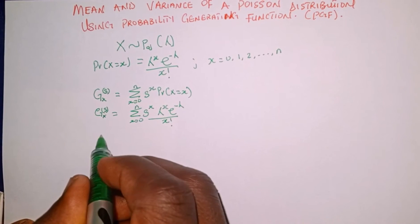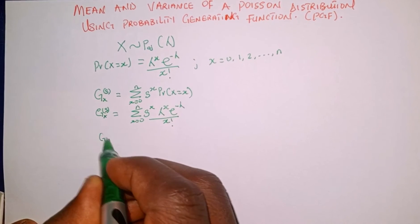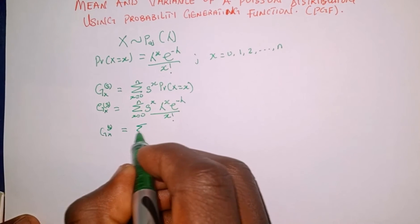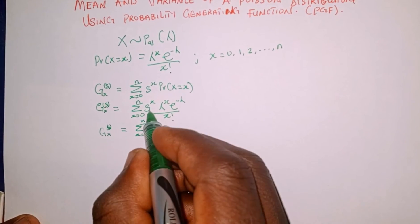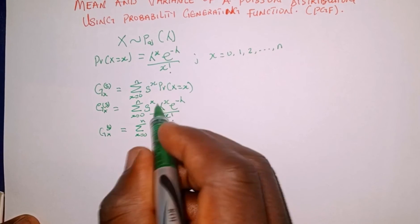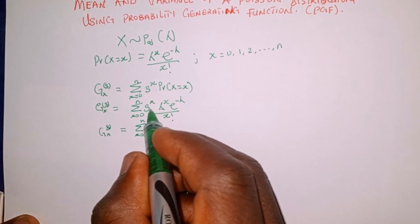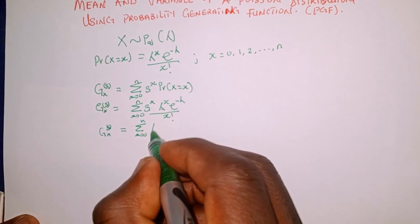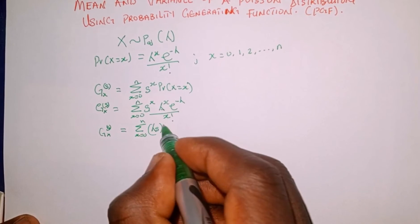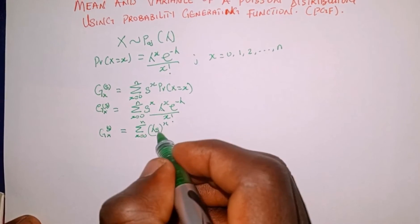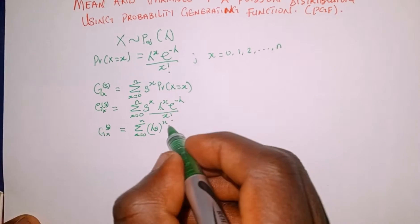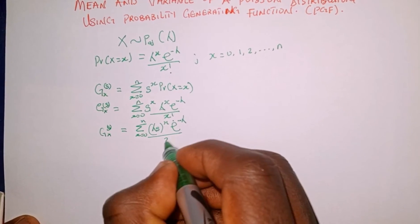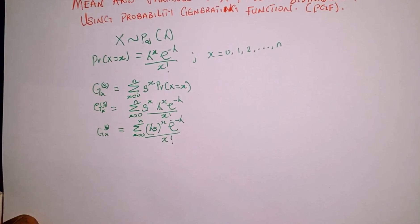The next thing we're going to do is simplify. We have G sub X of s equal to the summation as x raises from 0 to n. Since s and lambda are both raised to the same power x, we can multiply the bases together: s multiplied by lambda gives us lambda s, all raised to the power of x. Then times e raised to the power of minus lambda, all over x factorial.